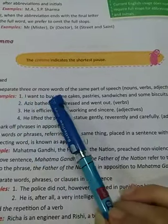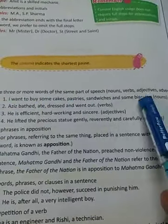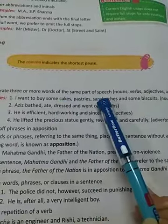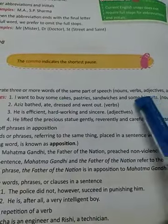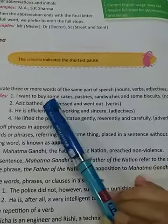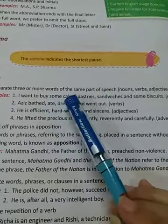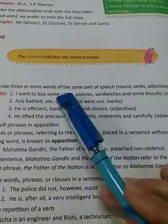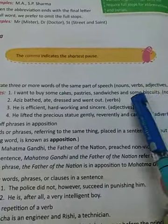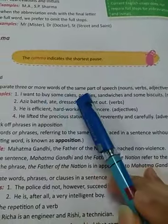For example: 'I want to buy some cakes, pastries, sandwiches and some biscuits.' As you can see, cakes, pastries, sandwiches and biscuits are nouns — more than one word. So in order to separate them, we use a comma.